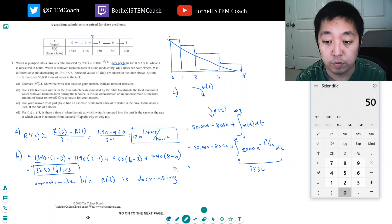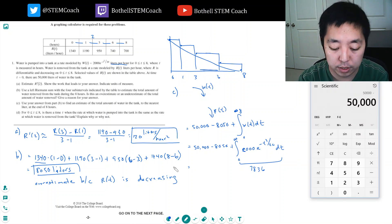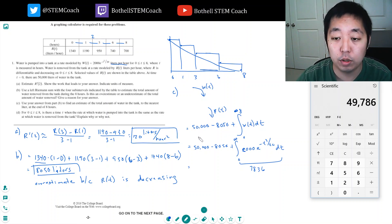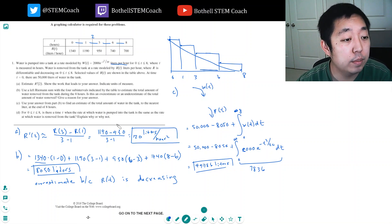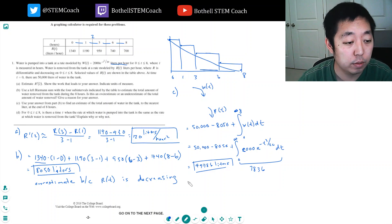I find this part to be equal to 7836 liters. So when I put this all together, I get 50,000 minus 8050 plus 7836, which equals 49,786 liters.